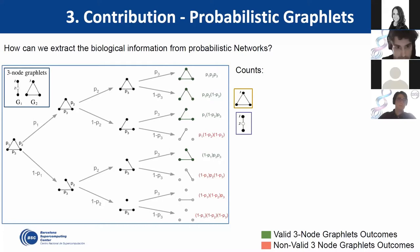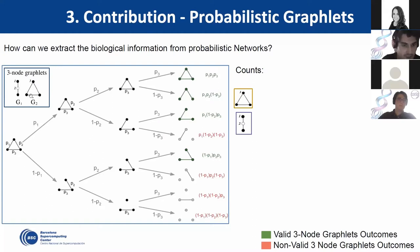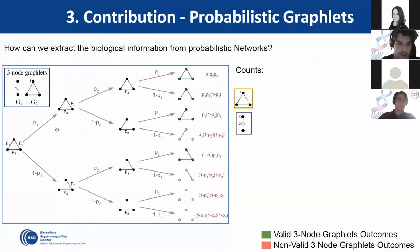Understanding probabilistic graphlets is quite easy if we focus on this example. Imagine we have a small network made of three nodes that are all connected, and we want to count the number of times we can find three-node graphlets — line and triangle — inside this network. If we were using normal graphlets, we only have one outcome: the triangle. But because we are using probabilistic networks, some connections can exist or not, giving us many different outcomes.